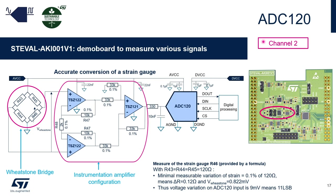Channel 2 is used for strain gauge measurement. It is composed of a Wheatstone bridge and an instrumentation amplifier to amplify the strain gauge variation. ADC120 reads the voltage image of the amplified voltage variation. For example, if we use 120 Ohm resistors in the Wheatstone bridge with a minimal measurable strain variation of 0.1%, the voltage variation on the ADC120 input is 9 millivolts, which means 11 LSB.